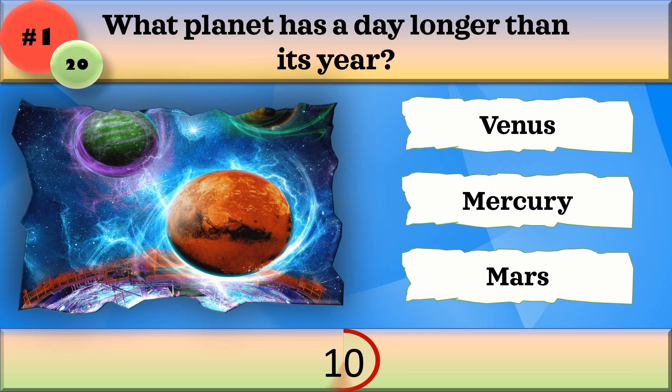What planet has a day longer than its year? Venus, Mercury, or Mars?